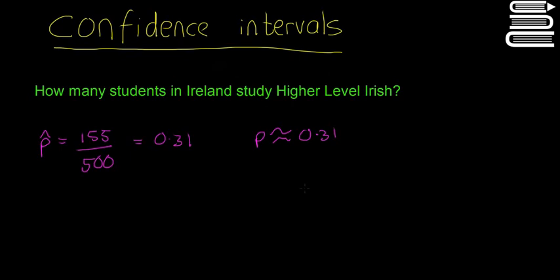In this video we're going to introduce confidence intervals and we're going to use the same example as last time for population proportions: how many students in Ireland are studying higher level Irish? We got a sample proportion from asking 500 people and we found that 155 out of the 500 are studying higher level.